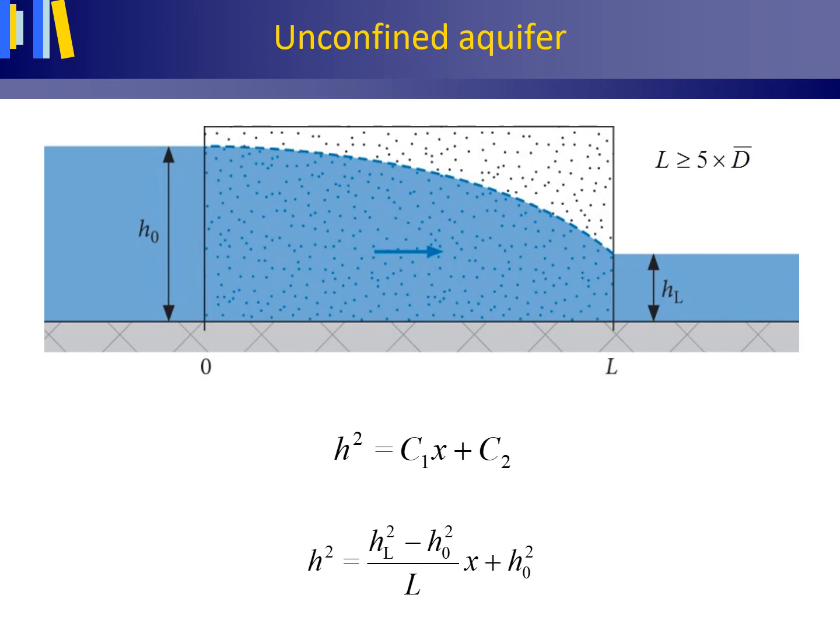Again, same as with the earlier case of confined groundwater flow, inserting the boundary conditions for known values of H0, L and HL. First, the left boundary condition for axis 0, H equals H0 to deliver C2, and then the right boundary condition for axis L, H equals HL, to deliver C1, and inserting these values into this equation delivers this equation.